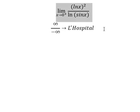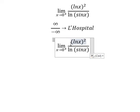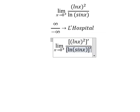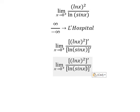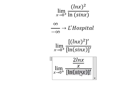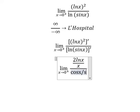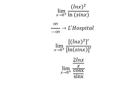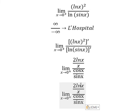That means we need to differentiate the numerator and denominator. We have 2lnx over x, and cosx over sinx. Now I will rearrange, putting x in the numerator, so we have like this.